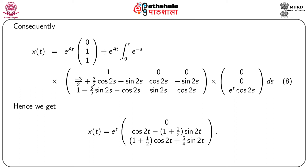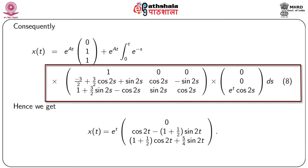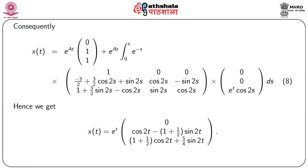Therefore e^{At} = X(t)·X⁻¹(0), and multiplying those matrices gives e^{At} = e^t·[1, 0, 0; −3/2 + (3/2)cos 2t + sin 2t, cos 2t − sin 2t, ...; 1 + (3/2)sin 2t − cos 2t, sin 2t, cos 2t]. Consequently, x(t) = e^{At}·[0,1,1]ᵀ + e^{At}·∫₀ᵗ e^{−As}·f(s) ds, which after simplification gives x(t) = e^t·[0, cos 2t − 1 + (1/2)sin 2t, 1 + (1/2)cos 2t + (5/4)sin 2t]ᵀ.